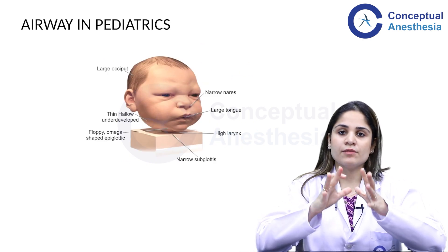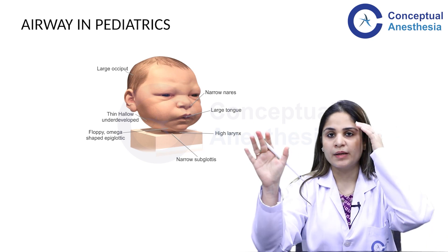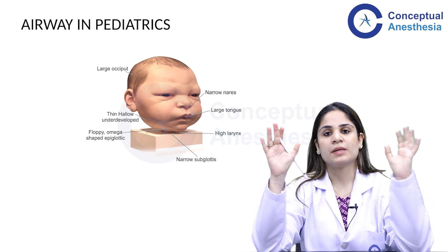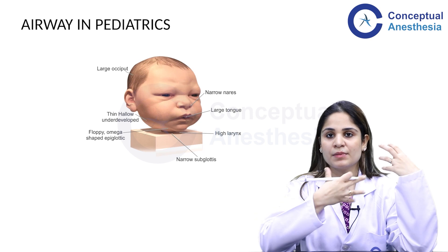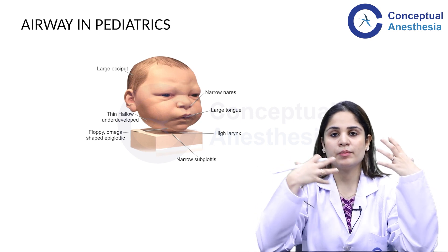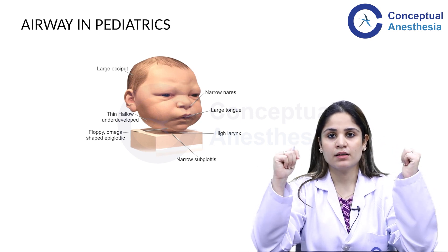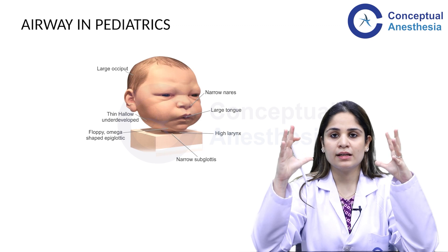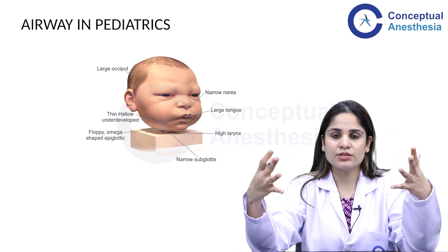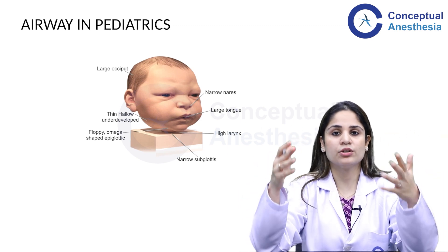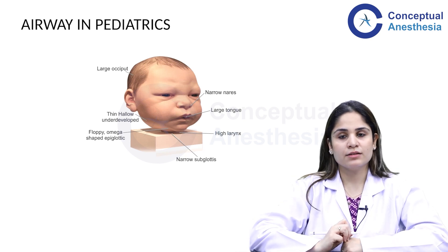The first and foremost topic is the airway in pediatrics. In most pediatric cases, it might seem easy to mask ventilate the child unless there is some congenital deformity or trauma of the head, face, or neck. But even in a normal child, there are subtle changes that make it difficult to intubate. Let us look at these subtle changes.